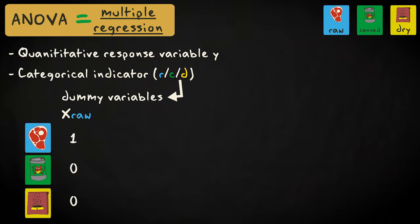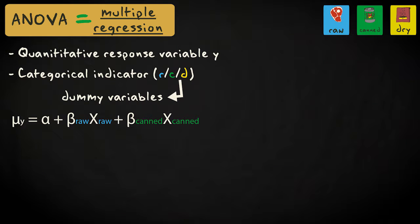The first dummy variable, x sub raw, distinguishes between cats fed on a raw meat diet and all other cats. The second dummy variable, x sub canned, distinguishes between cats on canned food and all other cats. Cats fed on dry food are identified by a score of 0 on both dummies. The regression model is mu sub y equals alpha plus beta sub raw times x sub raw plus beta sub canned times x sub canned.